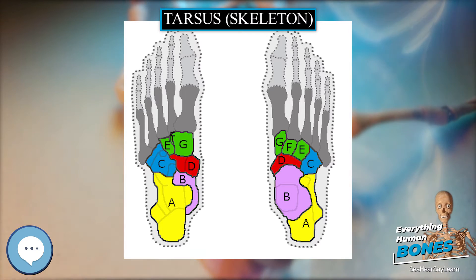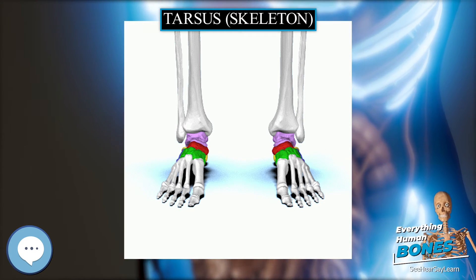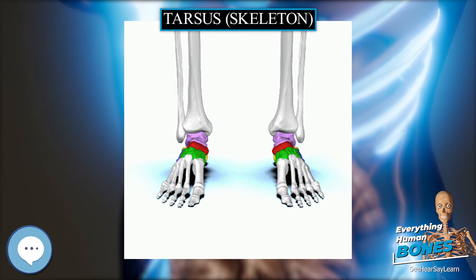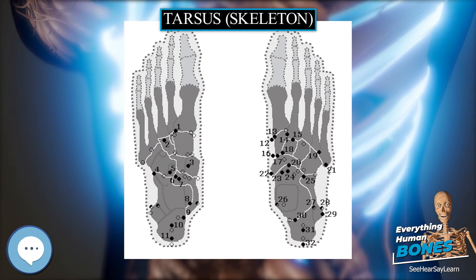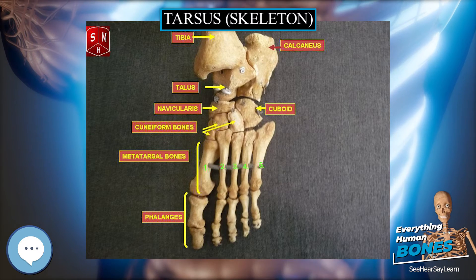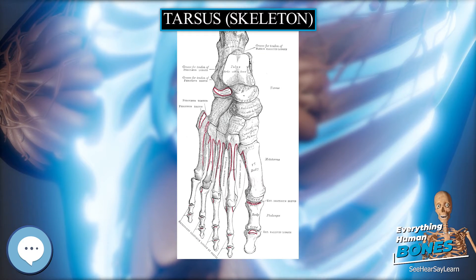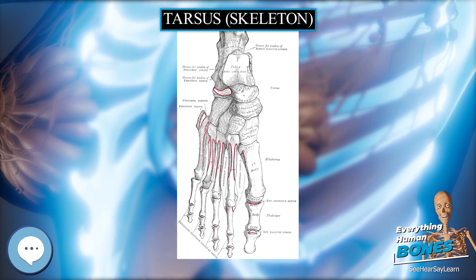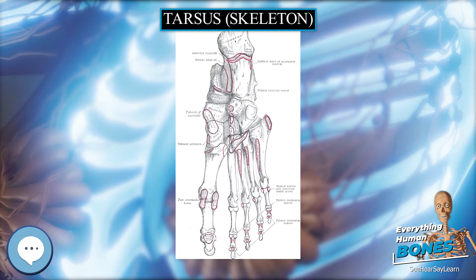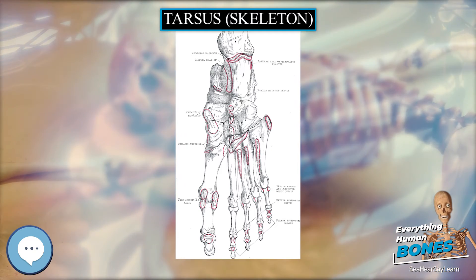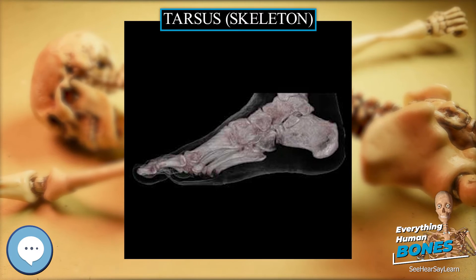It has two axes of motion. Inversion and eversion occur about a longitudinal axis oriented 15 degrees upward from the horizontal plane and 9 degrees medially from the longitudinal axis of the foot. Flexion and extension occur primarily about an oblique axis oriented 52 degrees upward from the horizontal plane and 57 degrees anteromedially. In vitro talonavicular motion is 7 degrees flexion/extension and 17 degrees pronation/supination, while calcaneocuboid motion is 2 degrees flexion/extension and 7 degrees pronation/supination.